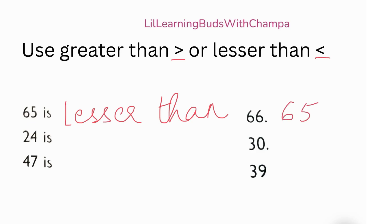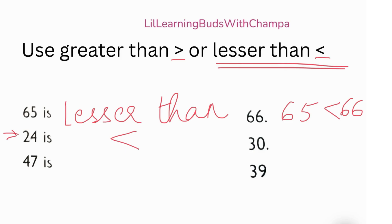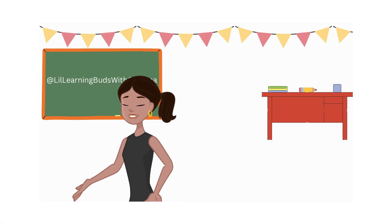So 24 is blank 30 — is 24 greater than 30, or is it lesser than 30? Yeah, lesser than! So 24 is lesser than 30. Remember, use this symbol for lesser than and this for greater than. Next — 47 is blank 39. Is 47 greater than 39? Does it come after 39 or before? It comes after, so it is greater — 47 is greater than 39. See you all in the next video!